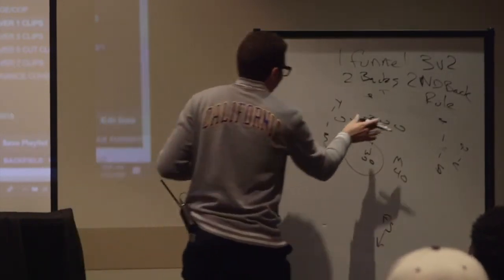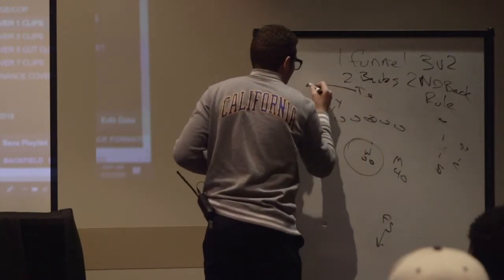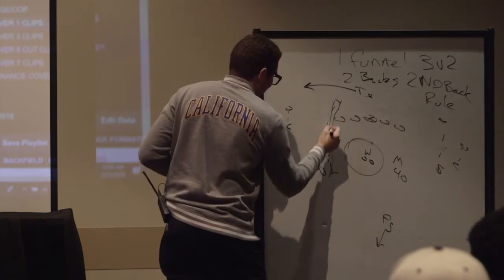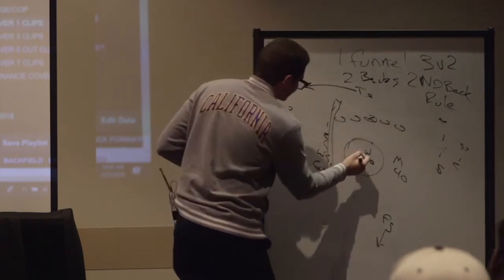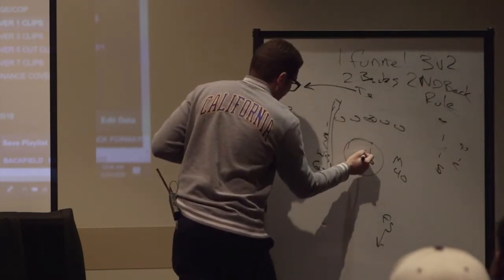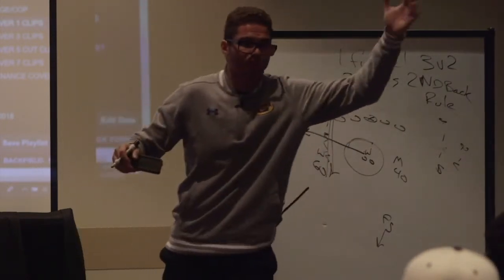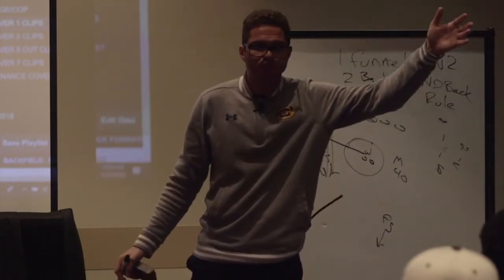So if they went like this, weak side safety is going to take the Y. The middle linebacker, the will, is going to push through and take the T. He's the second back out to that side. He's the second person. Does that make sense?